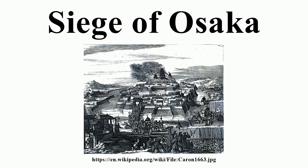Osaka forces commander Sanada Yukimura engaged in a battle with Date Masamune's forces but soon retreated towards Osaka Castle. Tokugawa forces did not pursue Sanada. The same day, Chosokabe Morichika and Todo Takatora battled at Yao. Another battle took place at Wakura around the same time, between Kimura Shigenari and Ii Naotaka. Chosokabe's forces achieved victory, but Kimura Shigenari was defeated by the left wing of Ii Naotaka's army. The main Tokugawa forces moved to assist Todo Takatora after Shigenari's death, and Chosokabe withdrew for the time being.